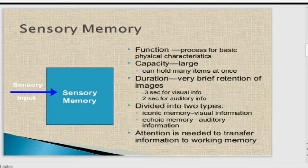Sensory memory's duration is very brief, but it can store a large amount of information at once. It is divided into two types: iconic memory, which is visual information from your eyes such as pictures and physical characters, and echoic memory, which is auditory information. Attention is needed to transfer information from sensory memory to working memory.